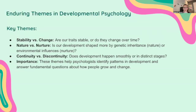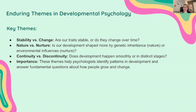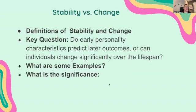Some of the key themes in 3.1: first, stability versus change — are our traits stable or do they change over time? Next, nature versus nurture — is our development shaped more by genetic inheritance or environmental influences? And continuity versus discontinuity — does development happen smoothly or in distinct stages? These themes help psychologists identify patterns in development and answer fundamental questions about how people grow and change.